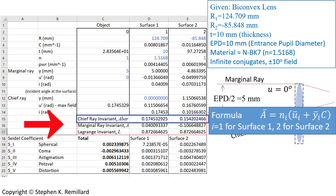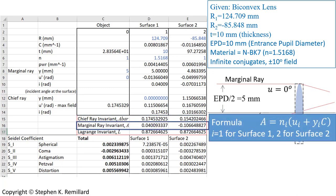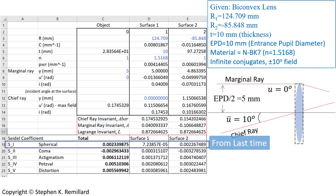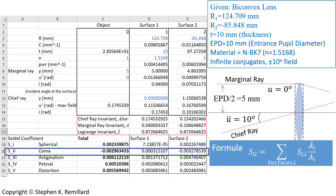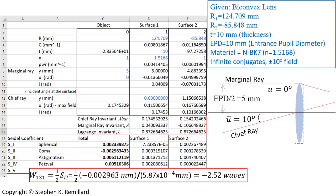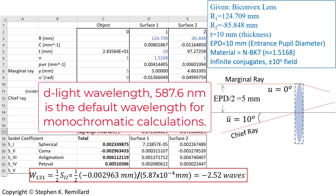The invariants are calculated using the expressions for chief ray invariant (from chief ray angle and height at each surface) and marginal ray invariant (from marginal ray angle and height at each surface). Referring back to the spherical aberration video for S₁, we take S₁ and adjust it with the ratio of invariants at each surface. Summing over both surfaces gives the coma Seidel coefficient S₂; the value minus 0.00296 is the sum. Dividing by two gives W₁₃₁ in millimeters, which divided by 587 nanometers gives minus 2.52 wavelengths of coma.